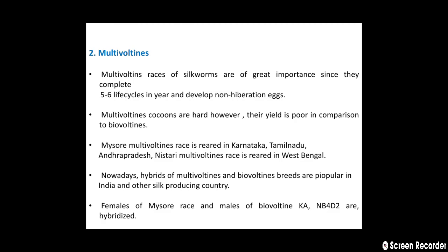The second type is the multi-voltine. Multi-voltine races of silkworms are of great importance since they complete five to six life cycles in a year and develop non-hibernating eggs. The multi-voltine cocoons are hard; however, their yield is poor in comparison to bi-voltines.